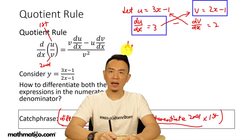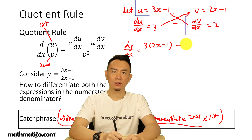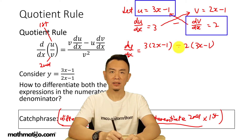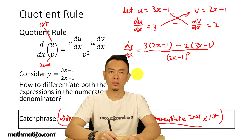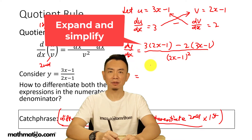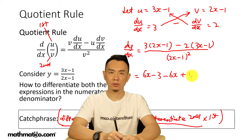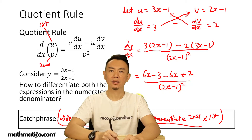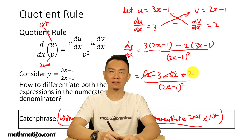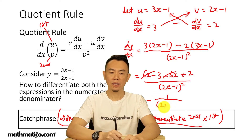So then dy/dx equals differentiate the first times the second: 3 times (2x minus 1), minus 2 times (3x minus 1), then divided by the second squared, which is (2x minus 1) squared. We multiply out and simplify: 3 times 2x is 6x minus 3, minus 6x plus 2, all divided by (2x minus 1) squared. So 6x minus 6x cancels, and negative 3 plus 2 is negative 1, giving us negative 1 over (2x minus 1) squared.